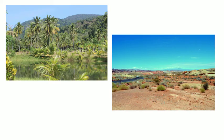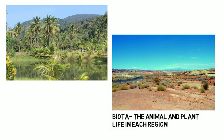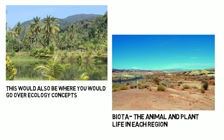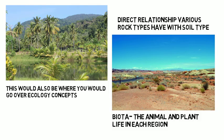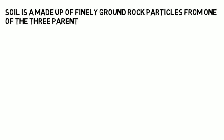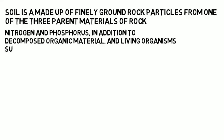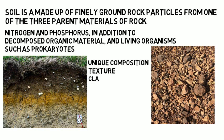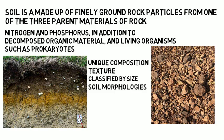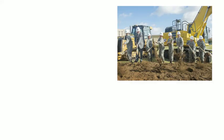In your physical geography classes, you will study the diverse types of climate on Earth, how landforms are created, and different biota, which is the animal and plant life in each region. This would also be where you would go over ecology concepts. One reason you spend so much time studying rock types is because of the direct relationship various rock types have with soil types. Soil is made up of finely ground rock particles from the three parent materials of rock, plant nutrients like nitrogen and phosphorus, decomposed organic material, and living organisms such as prokaryotes. Every soil has its own unique composition and texture and is classified by size. In a lab, you might be given a soil sample and using soil morphologies — which is how soil is classified by name, color, structure, texture, etc. — you would identify different soils. Identifying the soil type would be of particular importance for a developer on a new project because different soils have varying rates of erosion and stability based on their structure.